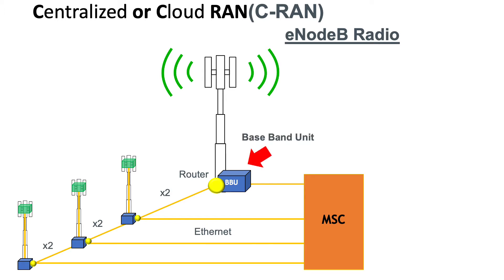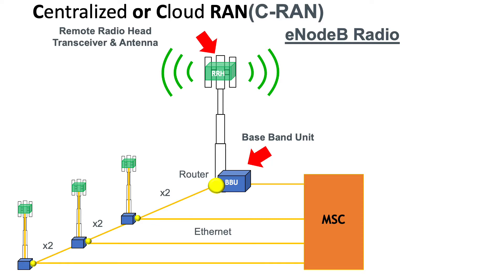If we take a look at a typical eNodeB today, we have a baseband unit and a router. The router provides connectivity to the other eNodeBs in the area, and at the top of the system we have the remote radio headend, the transceiver, and the antenna. The two systems — the BBU and the RRH — are basically interconnected using a CPRI interface, or Common Public Radio Interface.